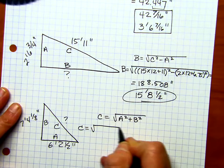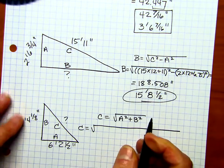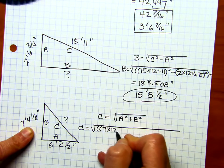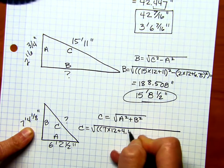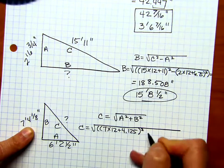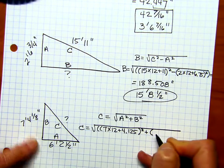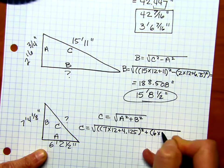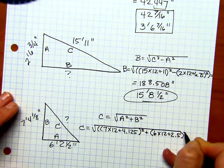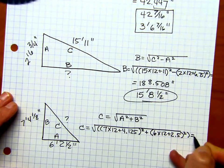So, here we go. A is going to be 7 times 12 plus 4.125, close X2, plus open 6 times 12 plus 2.5, close X2, close equals.